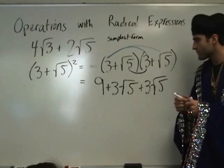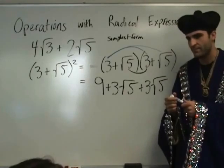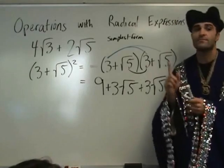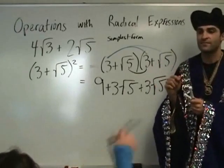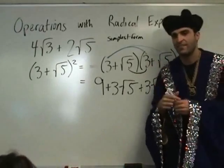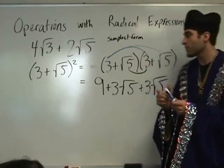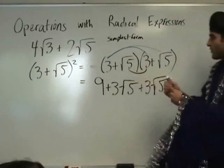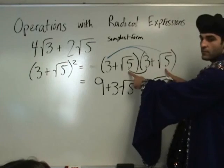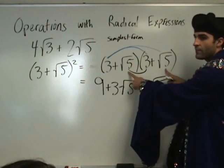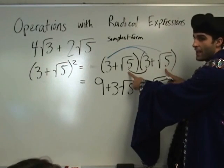Plus square root of twenty-five, which is what? Five. Five. Because it's not a square root anymore — we already square-rooted it. So square root of twenty-five. We're multiplying these two, it becomes square root of twenty-five, and square root of twenty-five is five.